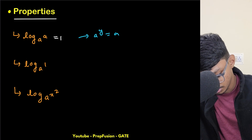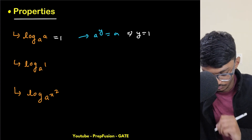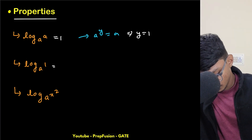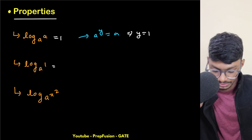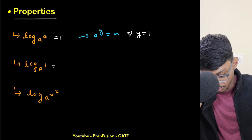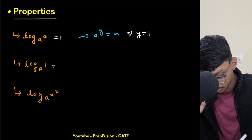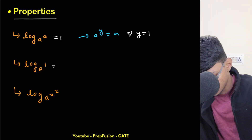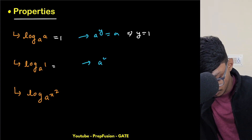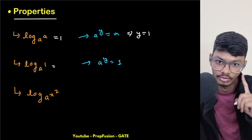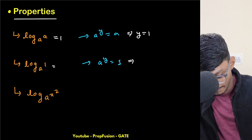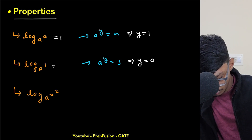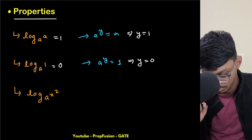The second property: log base a of 1 equals 0, because a raised to power y must equal 1, and a⁰ = 1, so y = 0. Third property: log base a of x² = 2·log base a of x — the exponent comes in front. This follows from the product rule: log(mn) = log m + log n.